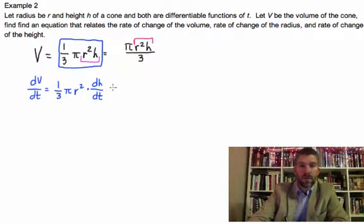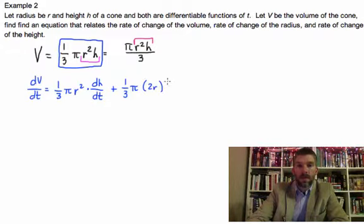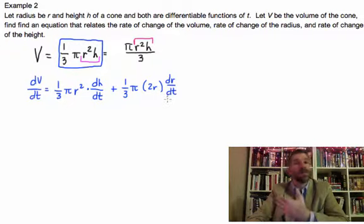Plus one-third pi times the derivative of the first, 2r, times dr/dt. Why dr/dt? Because we're looking at the change of the radius over the change in time.